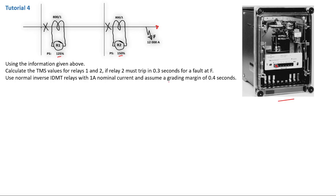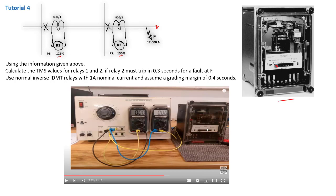In my previous tutorial, I explained the IDMT relay characteristics curve and grading margins. The grading margin of 0.4 seconds accounts for the sequences involved in a tripping device, including the function of a circuit breaker — those sequences combine into a grading margin of 0.4 seconds. Please watch that tutorial on IDMT relay characteristics curve to update yourself.